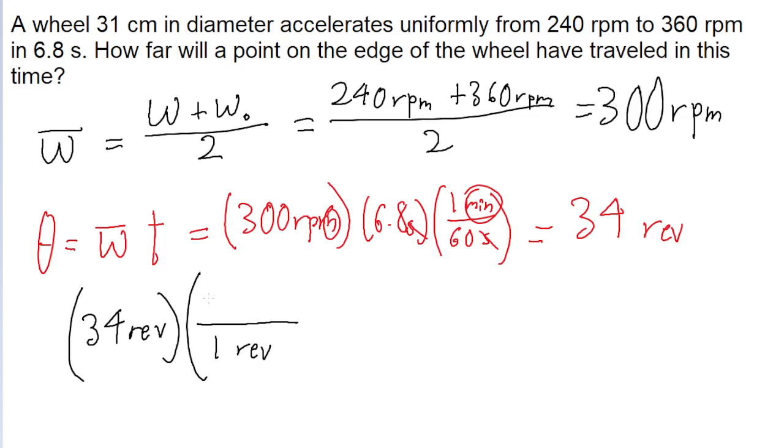And the formula for circumference is either 2π multiplied by the radius, or just π multiplied by the diameter. We're given the diameter, so that's what we'll use. So it's π multiplied by the diameter of 0.31 meters.